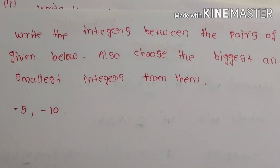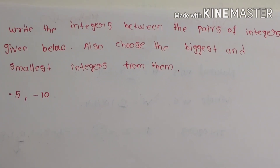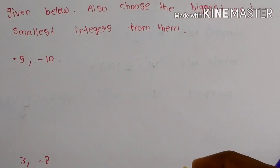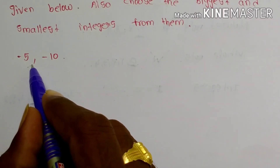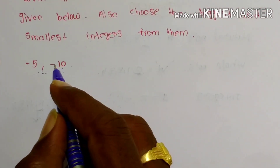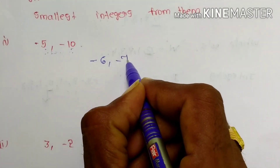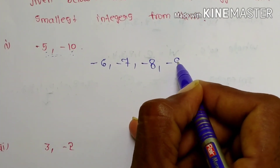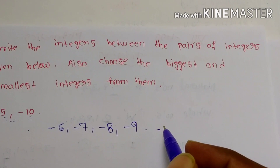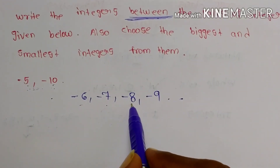Next question: write the integers between the pair of integers given below, and choose the biggest and smallest from them. First pair: minus 5 and minus 10. The integers between minus 5 and minus 10 are minus 6, minus 7, minus 8, minus 9. We do not write minus 5 and minus 10 because they are asking only for the numbers between them.